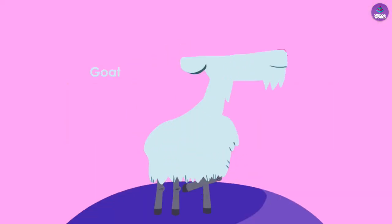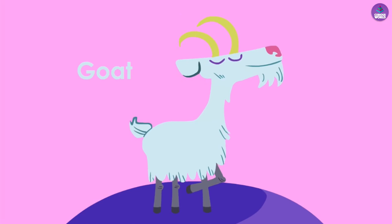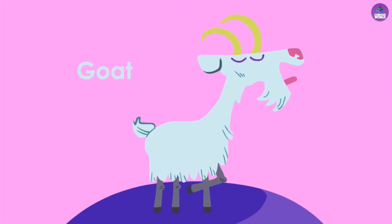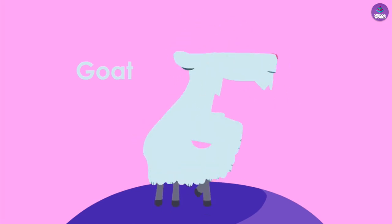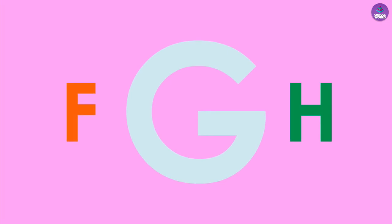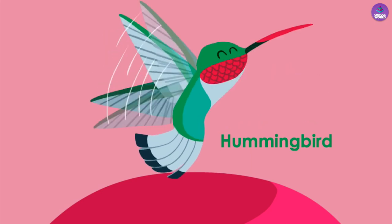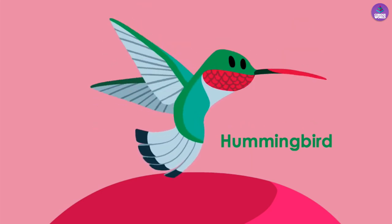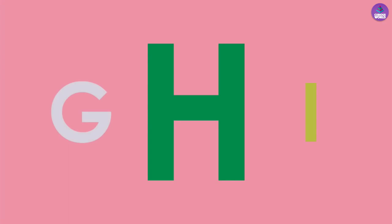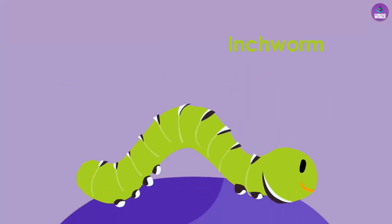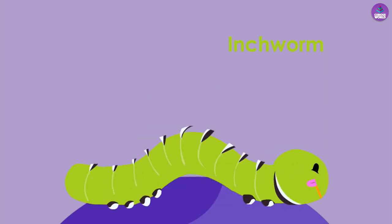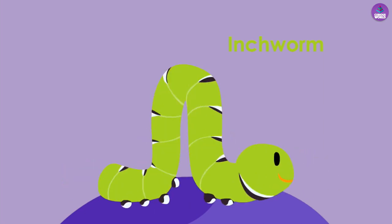G is for goat. G. H is for hummingbird. H. I is for inchworm. I.